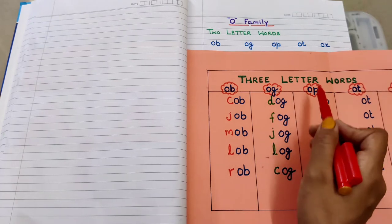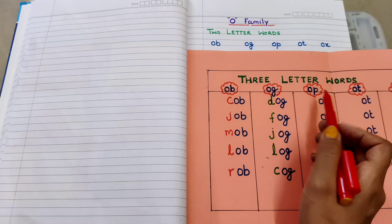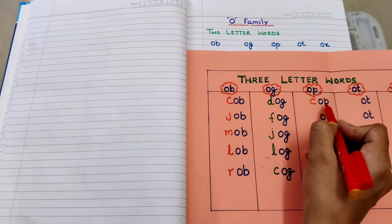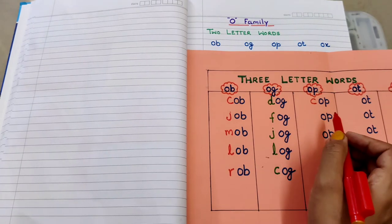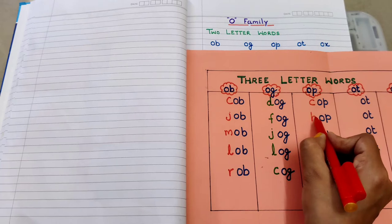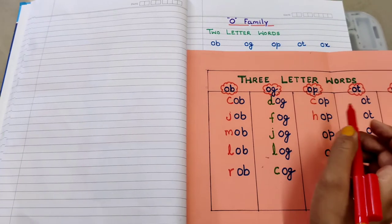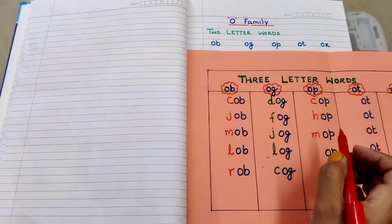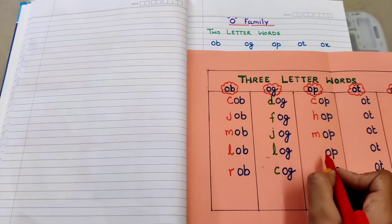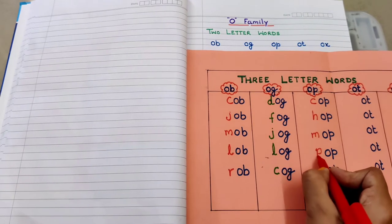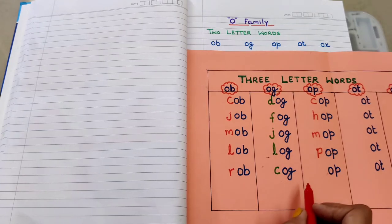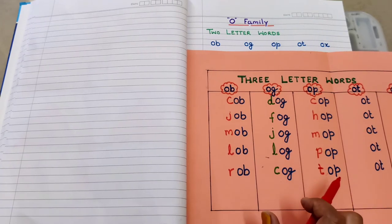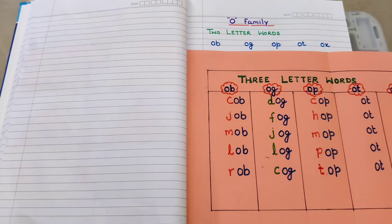Next is 'op'. In the op rhyme we will also add beginning sounds in the same way. I am adding C - 'c-op', cop. Next I'm adding H as a beginning letter - 'h-op', hop. Next M - 'm-op', mop. Then I'm adding P as a beginning letter - 'p-op', pop. And the last I'm adding as an onset T - 't-op', top.